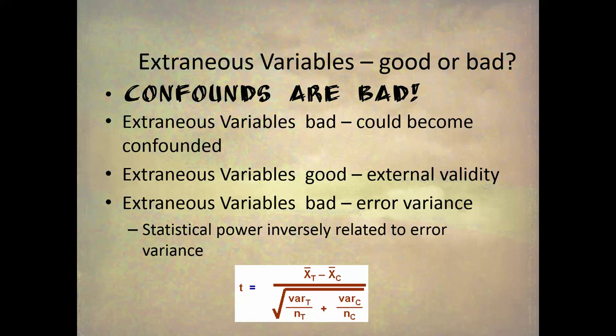For example, if I do a study on mood and helping — IV is mood, DV is helping — and I include only males but want to generalize to people in general, that's not good external validity. So I put males and females in it — that's good external validity. But now I have an extraneous variable: gender. Gender is neither the IV nor the DV; it's an extraneous variable. But it is exactly what I need to have good external validity.